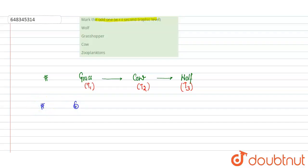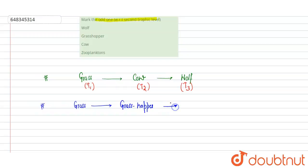The second option is grasshopper. In any food chain, it will start with grass, and then grasshopper feeds on the grass. The grasshopper is then fed upon by the frog or snake or any other organism. Grasshopper remains at the second trophic level. The snake may further be fed upon by a larger animal at trophic level four, but grasshopper stays at the second trophic level.